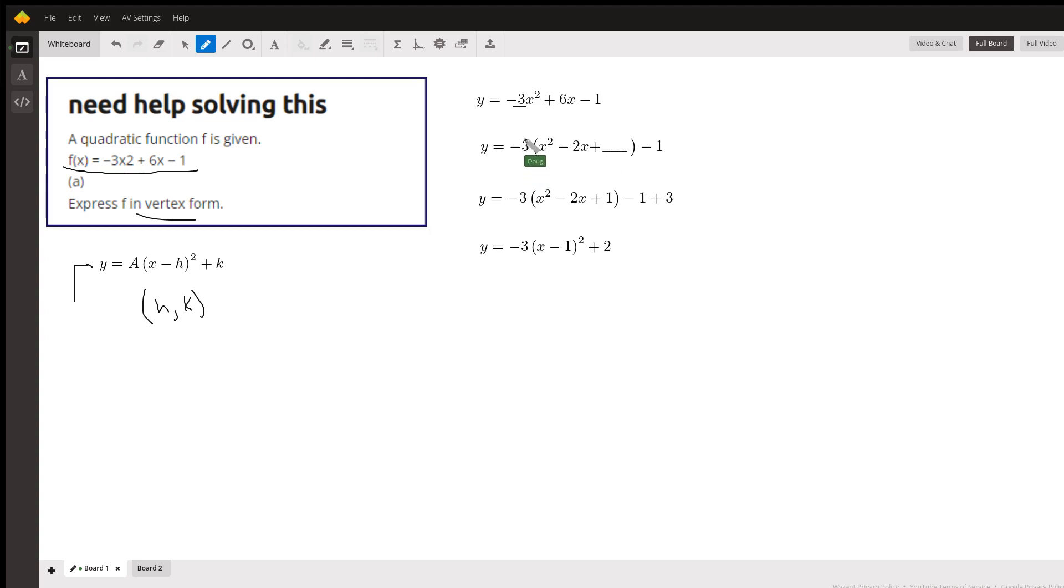You can double check your work by redistributing the negative 3. Get negative 3X squared plus 6X. That looks like it's right then. And then you leave this constant term out to the right.